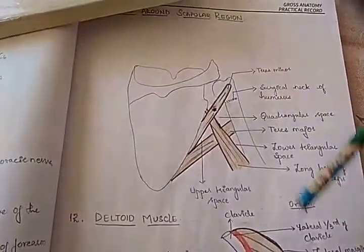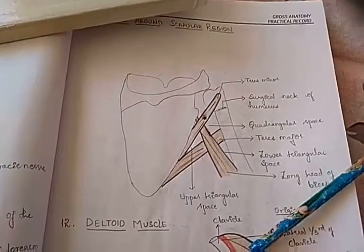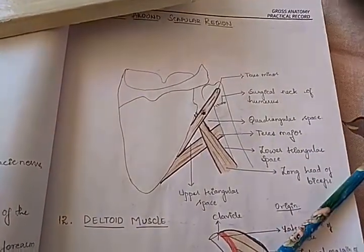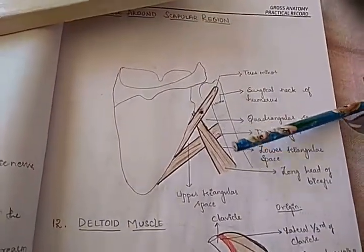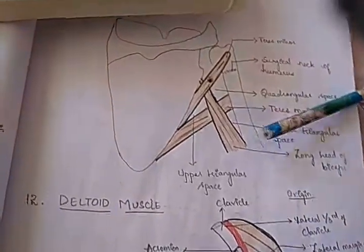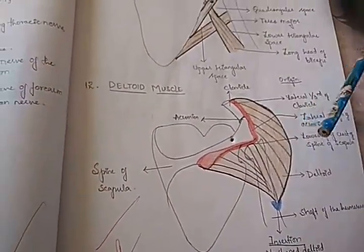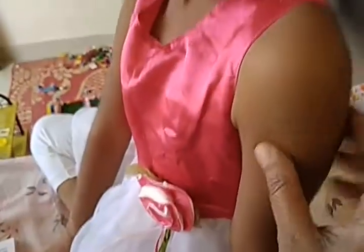Then what are these? This is the scapular region. What are these muscles called? Is it rotator cuff muscles or something? This is deltoid muscle. You know deltoid, where it is here on your shoulder. This is the deltoid.